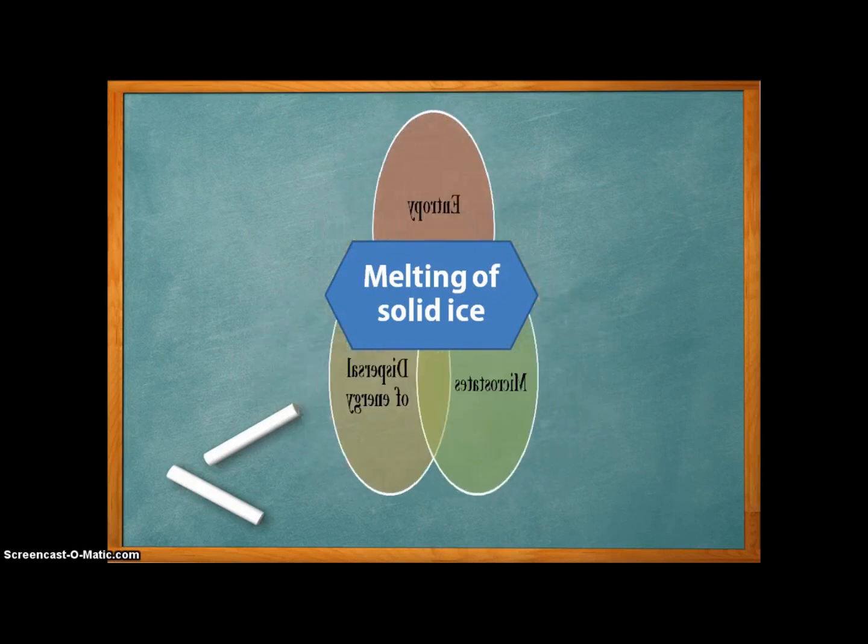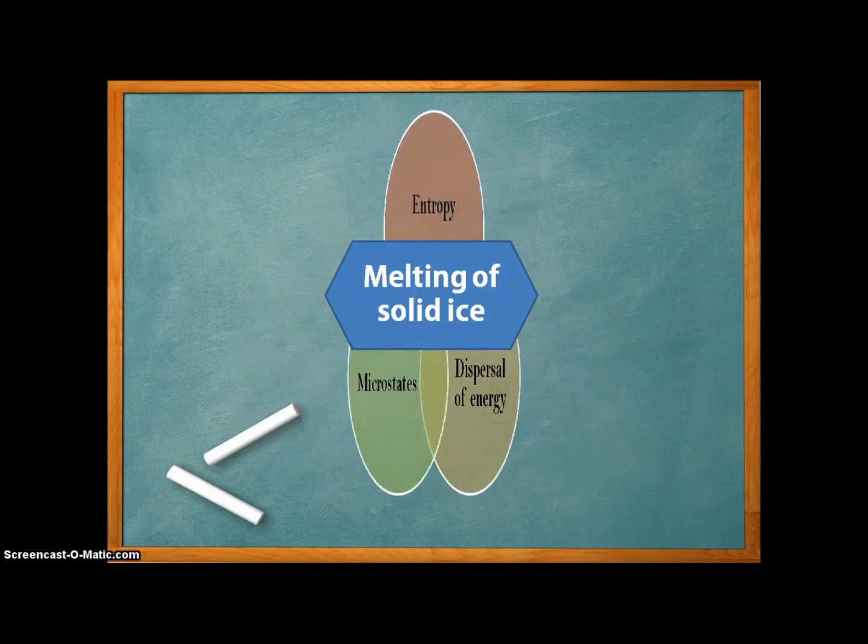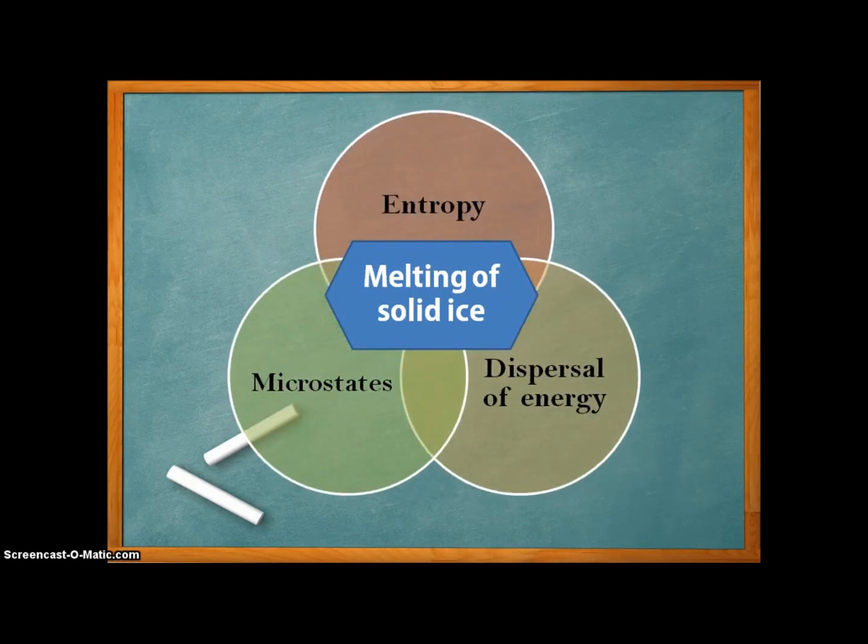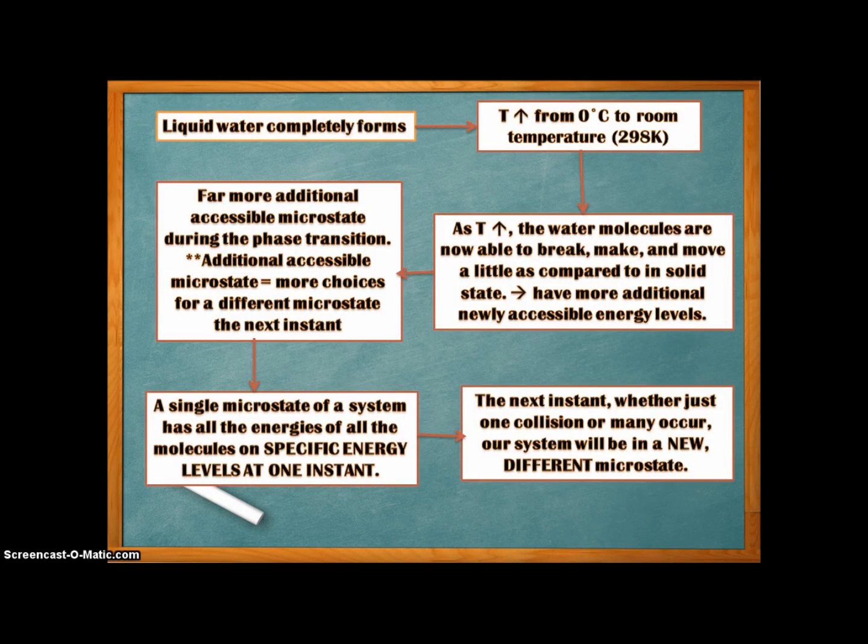Alright, like you said, so what does microstate of a system have to do with dispersal of energy and results in an increase in entropy during the melting of ice? How actually are they related? In the melting of ice, energy is absorbed from the surroundings to the system. Once liquid water is completely formed from the solid ice, the temperature of water starts to increase from 0°C to room temperature. Thermal equilibrium is reached as it obeys the Zeroth law of thermodynamics.